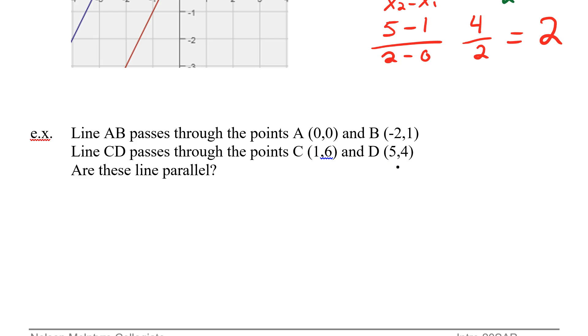So essentially I'm saying, do I have the same slope? So let's look at AB. Now again, whenever I have my coordinate points, I know the x is first and the y is second. So let's do y2 minus y1 over x2 minus x1. The y from the second point is 1 minus 0 divided by negative 2 minus 0. So 1 divided by negative 2. So we can express this as negative 1 half.